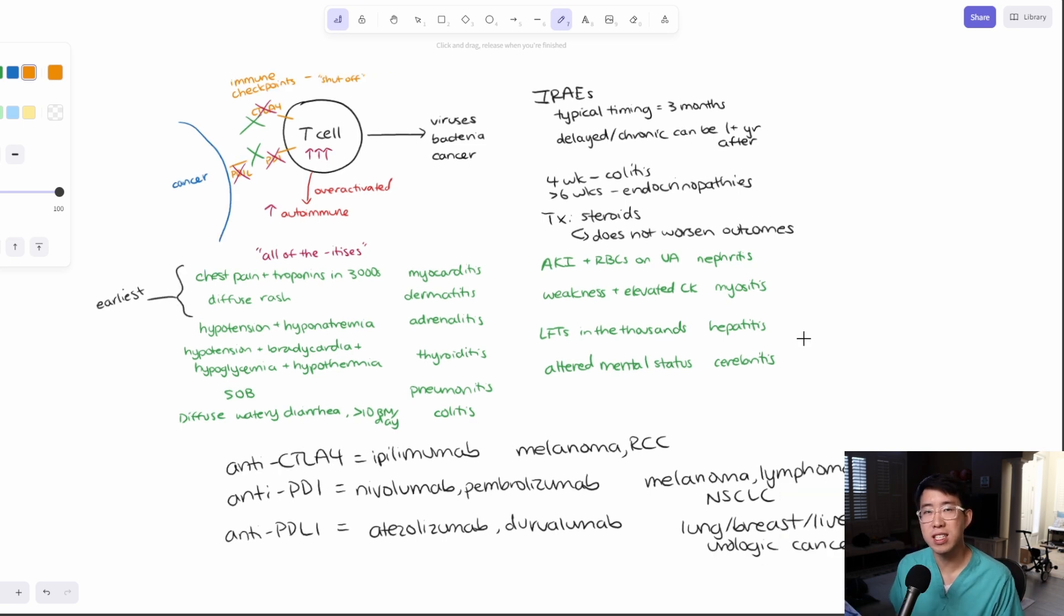So one interesting thing to note is that not all cancers are expected to respond equally to immunotherapy. There are some cancers that have much better response rates than others. And generally, these are going to be cancers that have a high burden of mutations. So cancers that tend to mutate a lot, like melanoma, where you have all this sun exposure, or any carcinogen-related cancers, like related to smoking and things like that, respond better to immunotherapy.